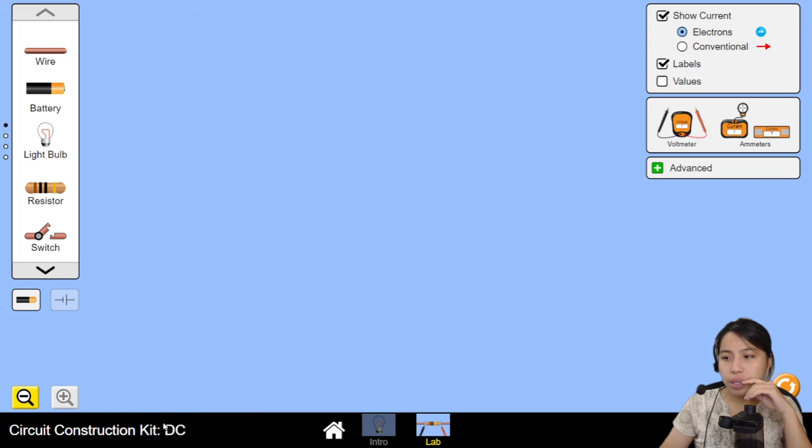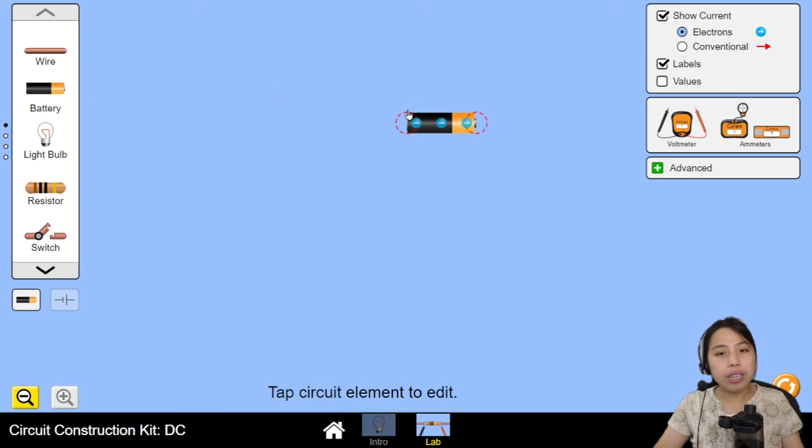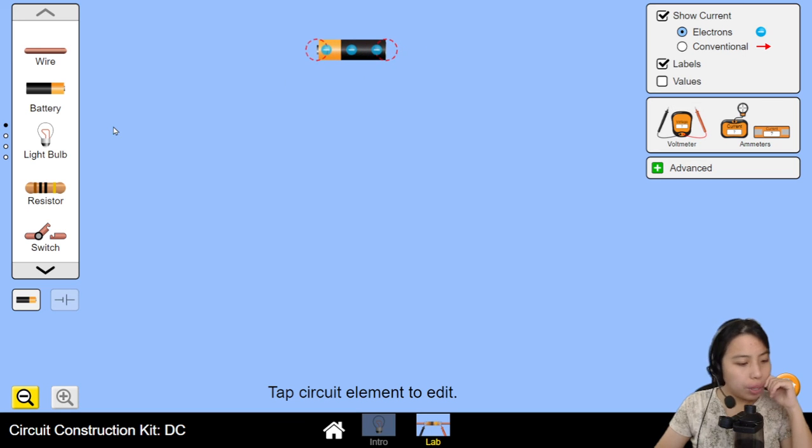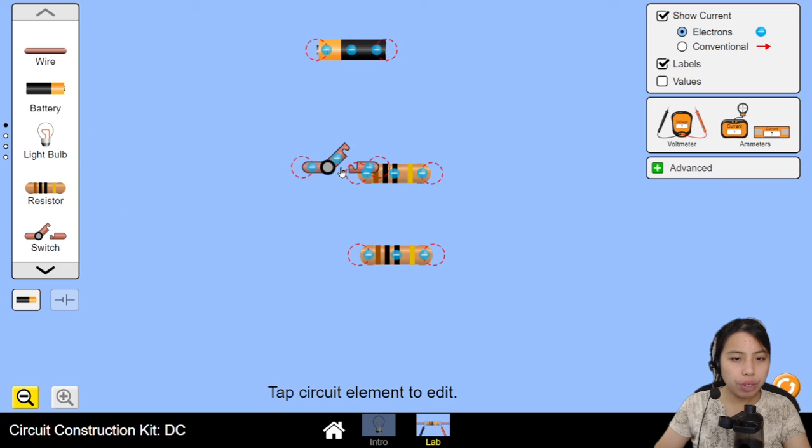Just google DC construction kit, it'll probably bring you there. So here, you can try to construct the circuit. Like legit, like actually construct the circuit. Give me a second to construct. Put a battery here. We put a resistor here and another resistor here. There's two switches. Switch. Switch. We need to put an ammeter.